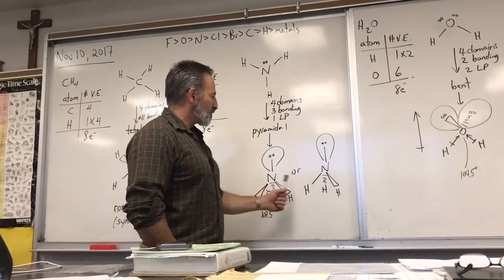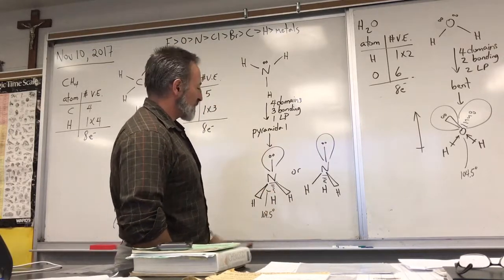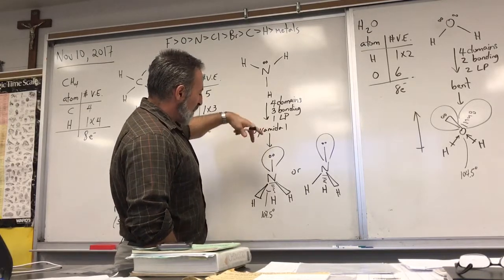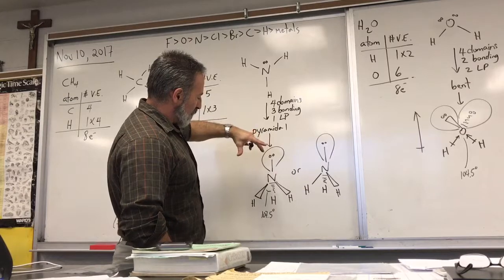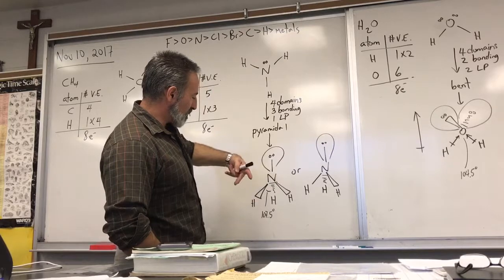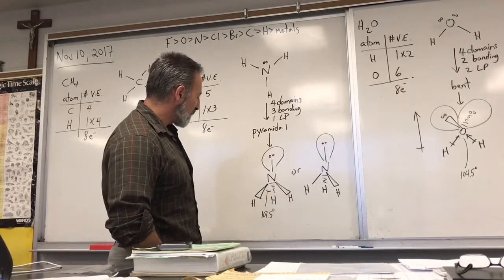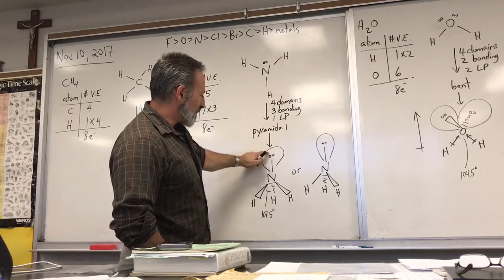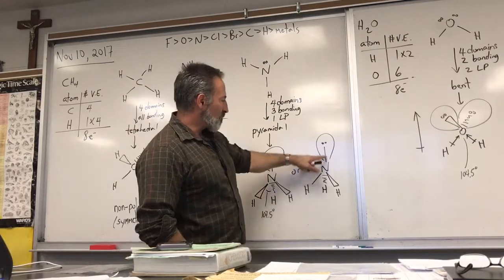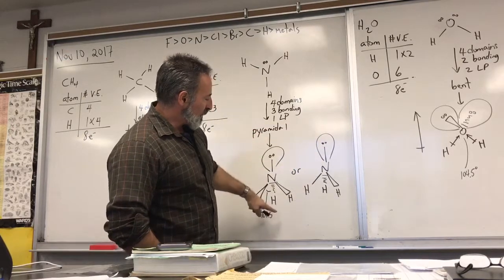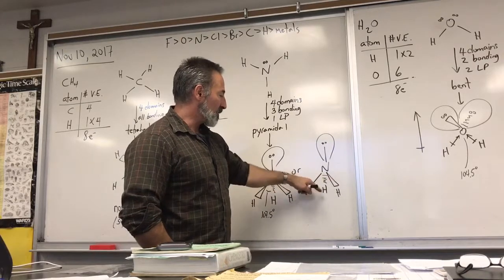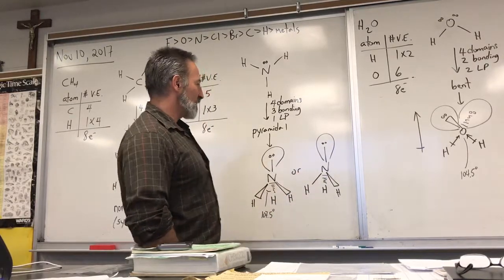You can draw the molecule in more than two different ways; these are the two ways I prefer. I like to show the lone pair pointing straight up and the bonding electrons like the legs of a stool. I've drawn this one with two bonds coming forward and one going behind. The bond angle is slightly less than 109.5° because the lone pair compresses it downwards. You can also draw it with the lone pair straight up, one hydrogen in the plane of the blackboard, one leg forward, one leg back — these two drawings are identical.